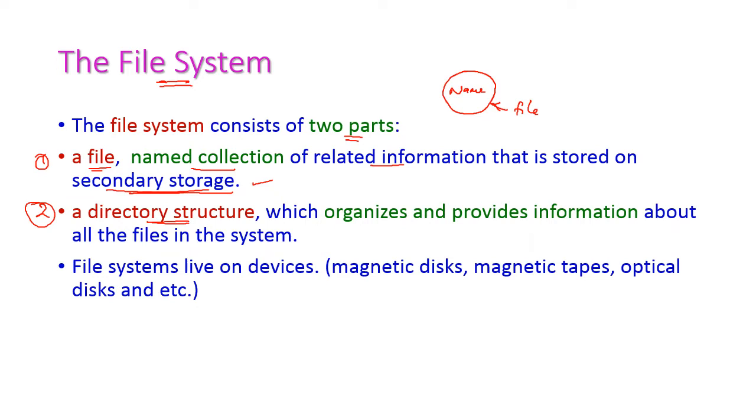Directory structure is used to organize and provide information about all the files which are stored in the system. The purpose of directory is to organize and maintain the information about all the files. When it comes to file system, file systems live on devices, that is secondary storage devices.